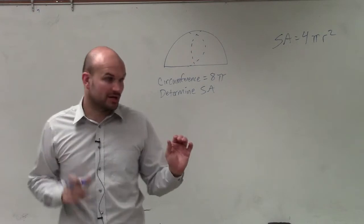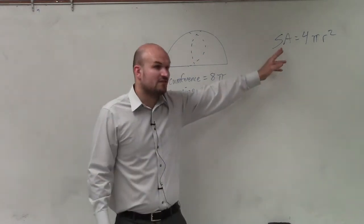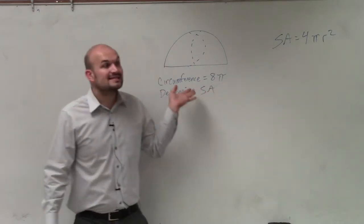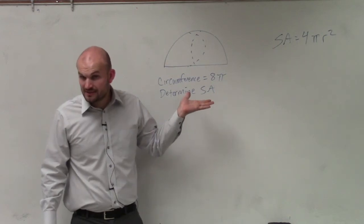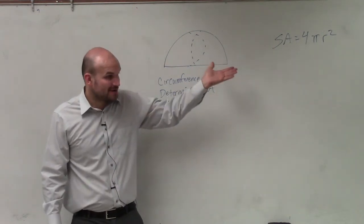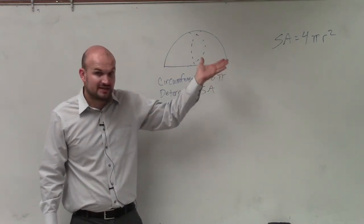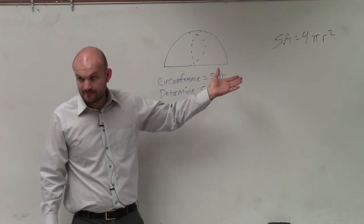Now, the other thing to remember, though, that's the surface area of a sphere. This is half of a sphere, correct? So I need to take whatever I get for the sphere and then divide it by 2. That make sense? Yeah.